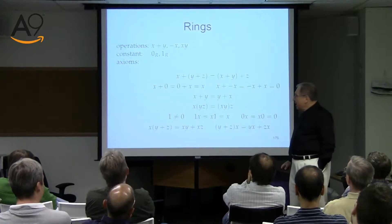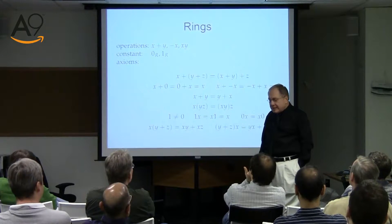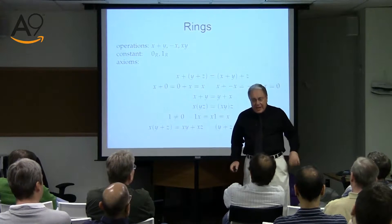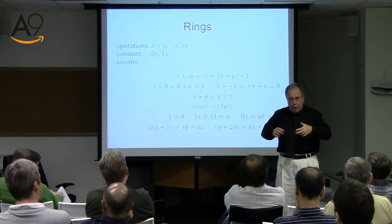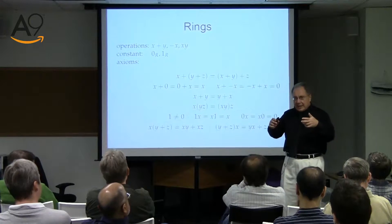A ring is something which in many respects behaves like integers. The canonical model of rings is the integers. If you want to pick one ring which exemplifies rings, it's the integers. The idea of a ring is an idea of abstracting properties of integers — just as an iterator is an idea of abstracting pointers.